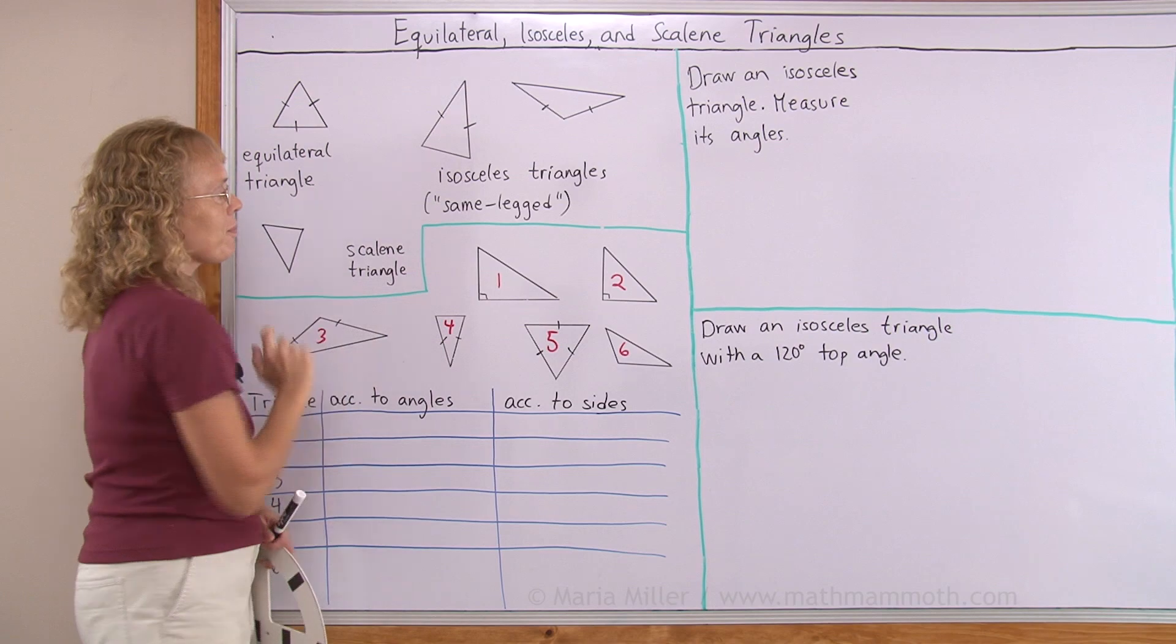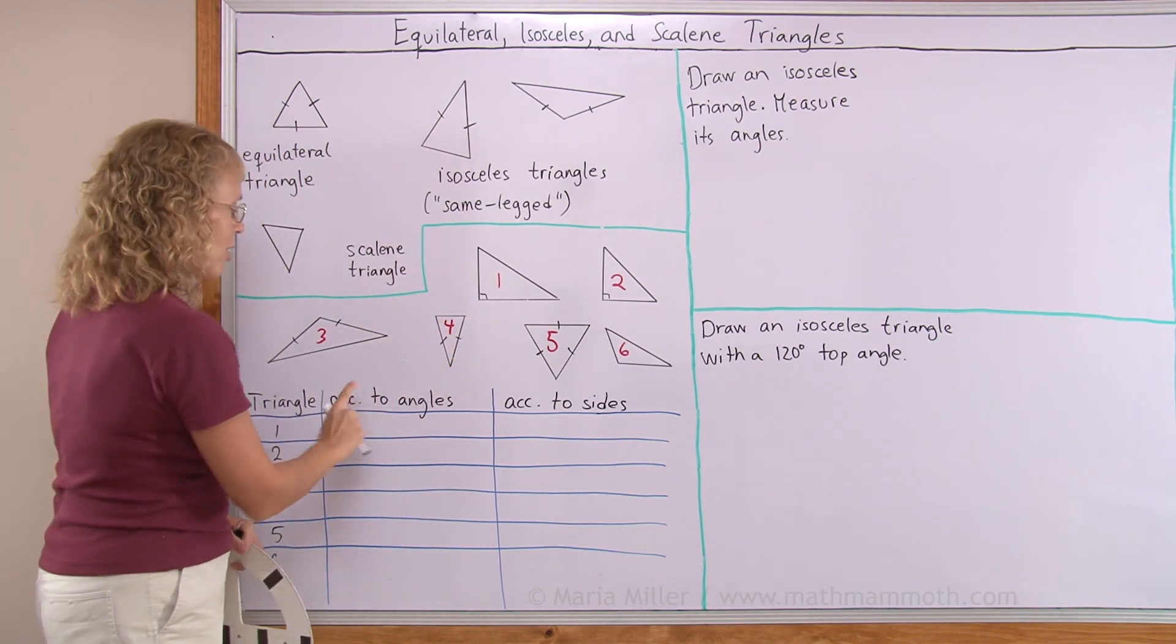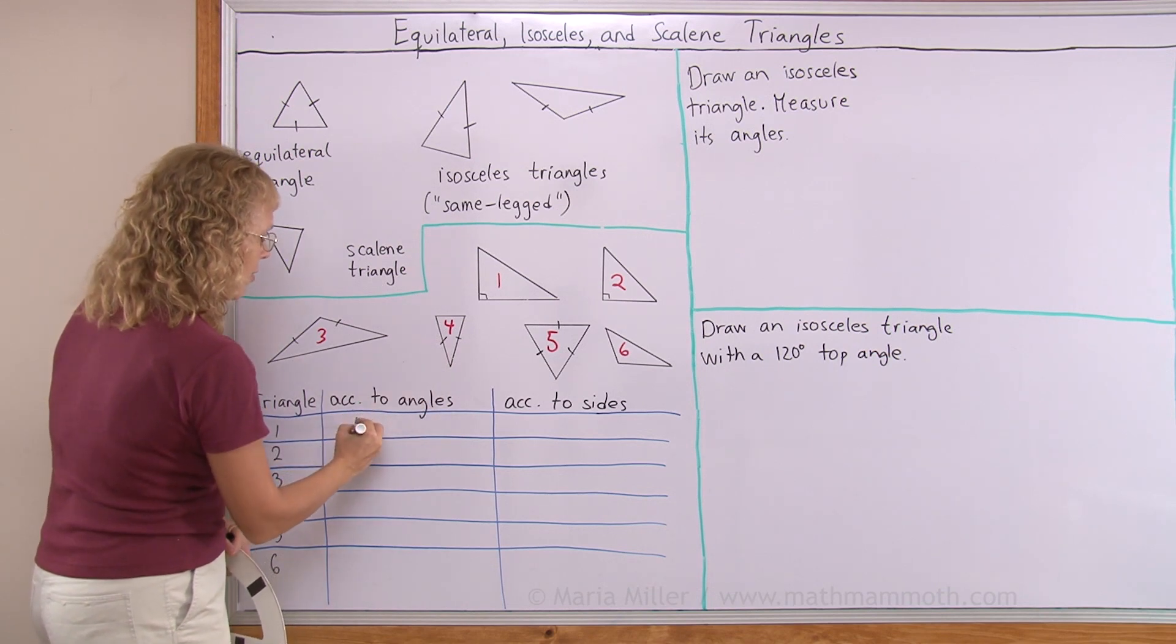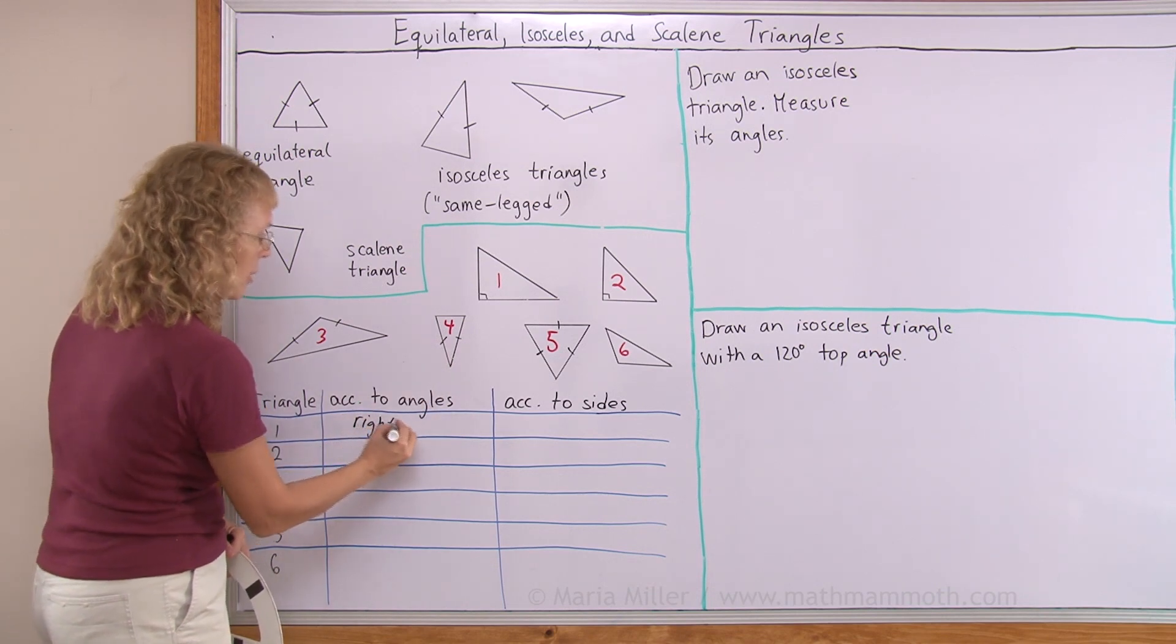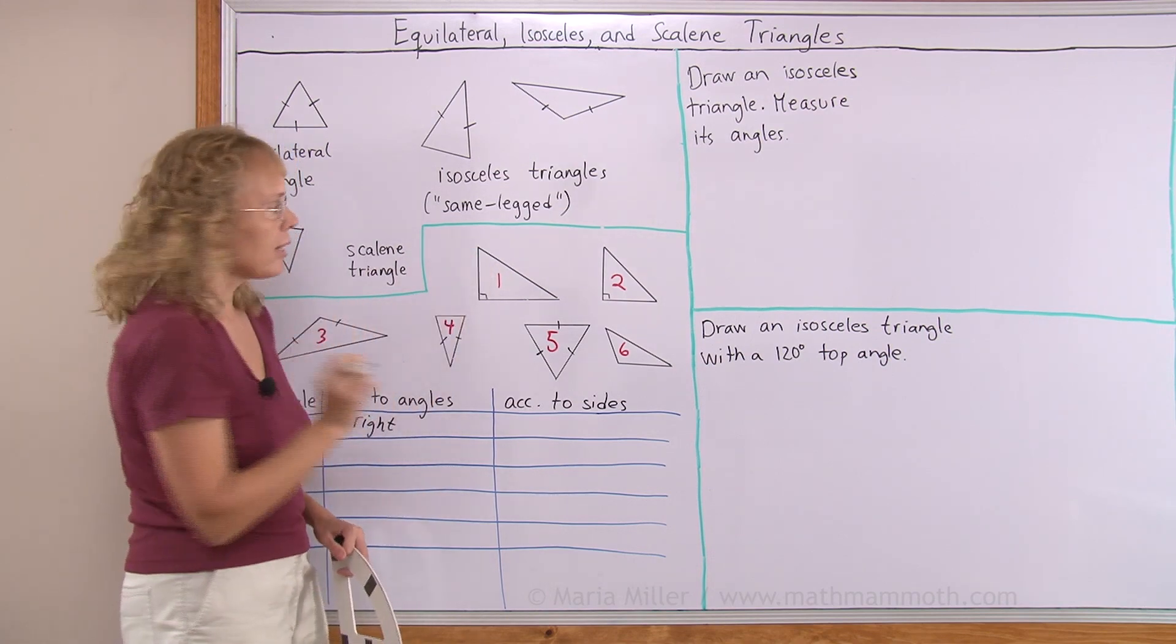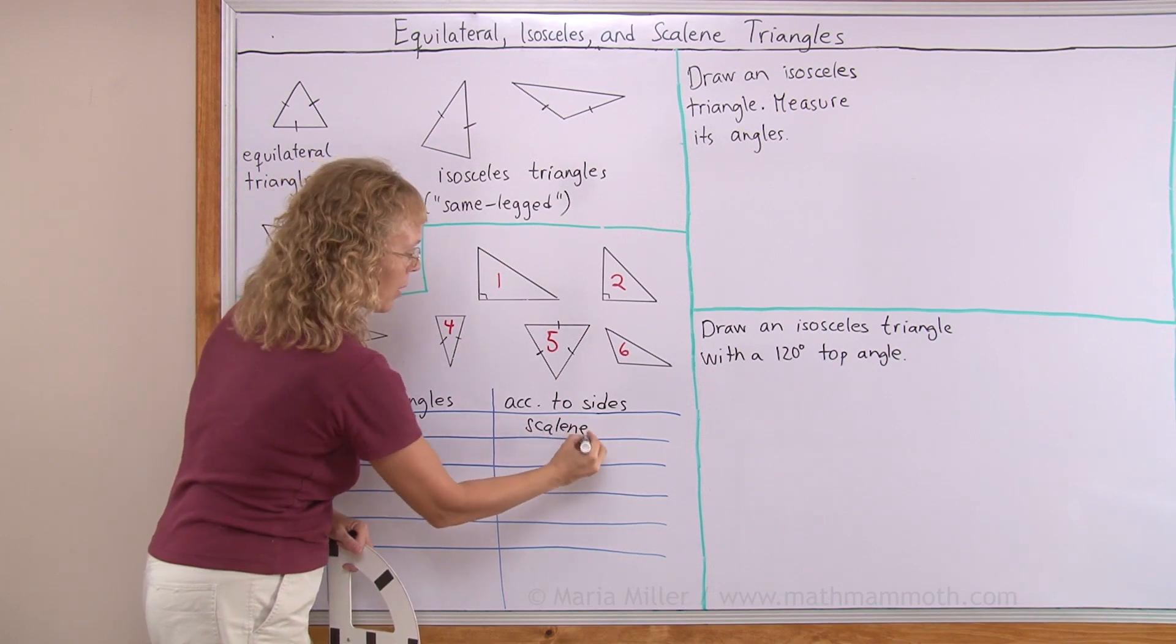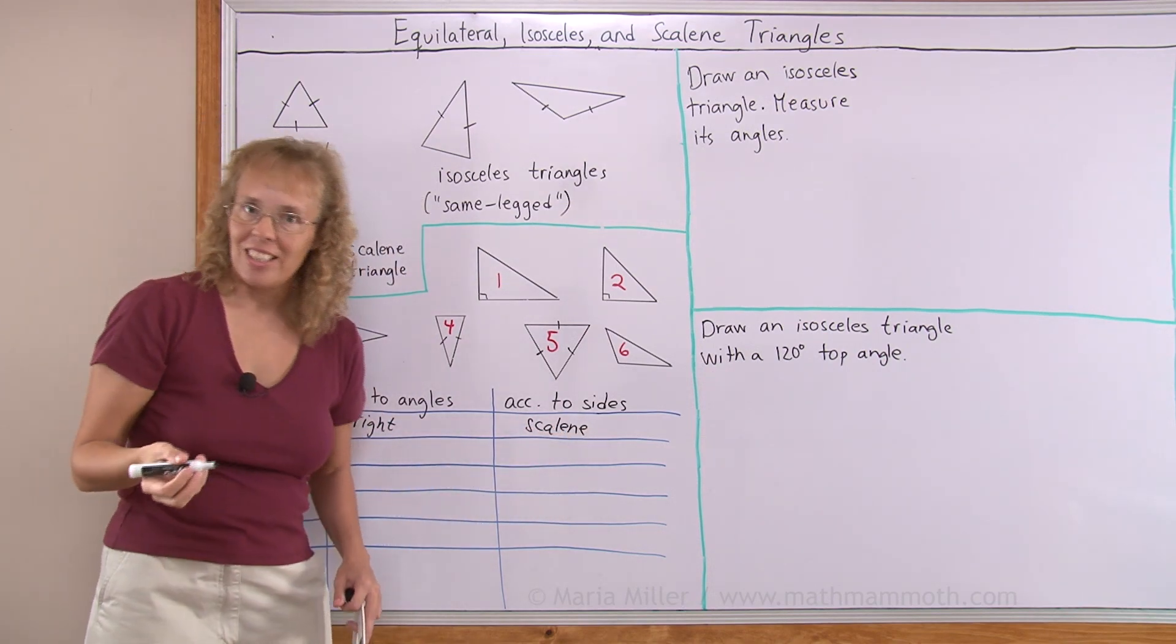Number one here. It is a right angle. Obviously, it's a right triangle then. According to angles, it is classified as a right triangle. According to sides, you check if there are any congruent sides. No, scalene. So we can call it a right scalene triangle.